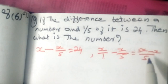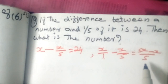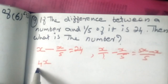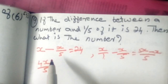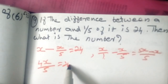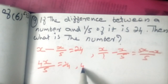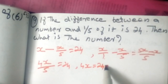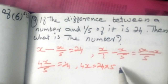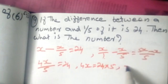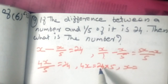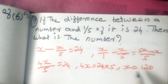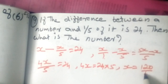That means 5x minus x by 5. 5x minus x is 4x. 4x by 5 is 24. So 4x is equal to 24. That means x is equal to 24 into 5 divided by 4.